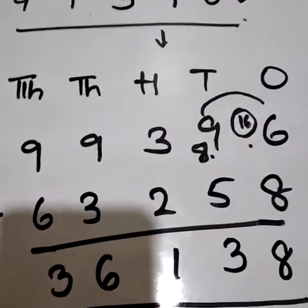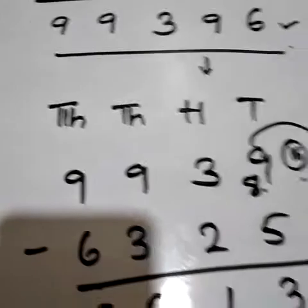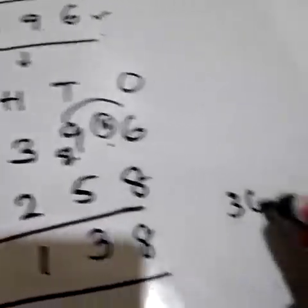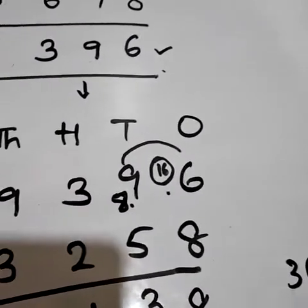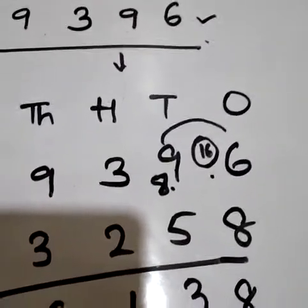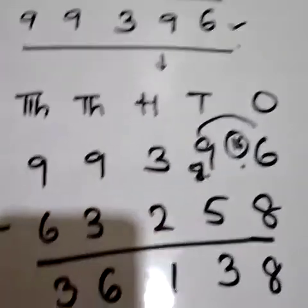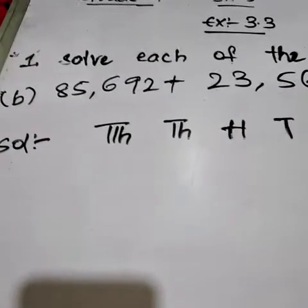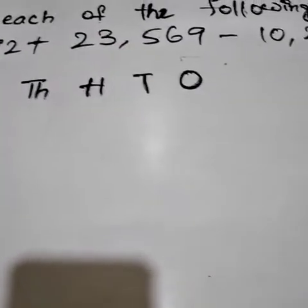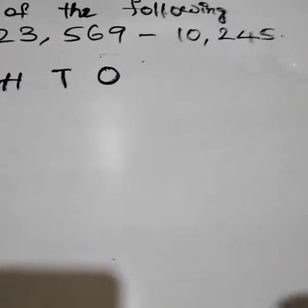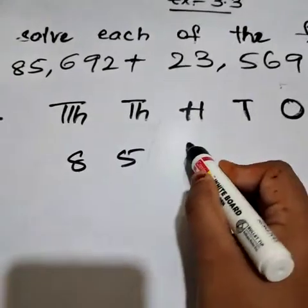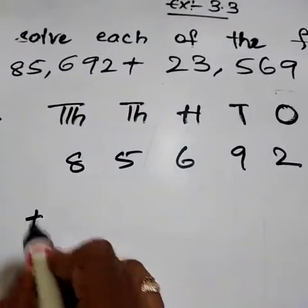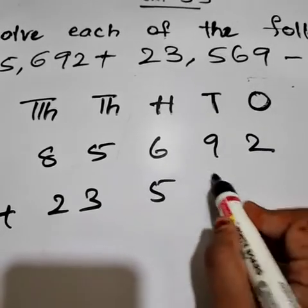So what we got as the result? We got 36,138. Understood? Like that, you have to solve. Easy, no? Yes, very easy. Let us do the second one. This is our second question: 85,692 plus 23,569 minus 10,245. Let us do this. 85,692 plus 23,569.